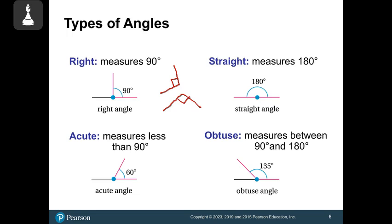We have a straight angle, also known as a straight line, which measures 180 degrees. An acute angle measures less than 90 degrees. An obtuse angle measures between 90 and 180 degrees — it's got to be a little bigger than 90, but it cannot equal 180.